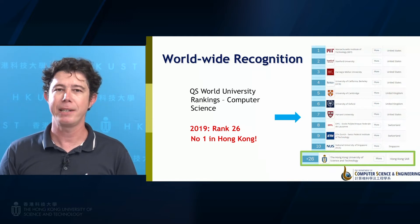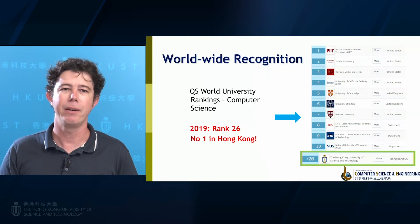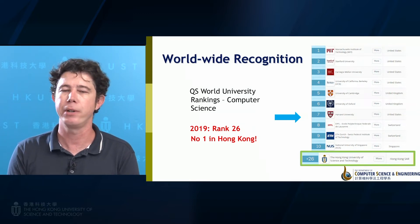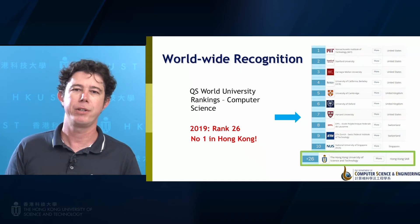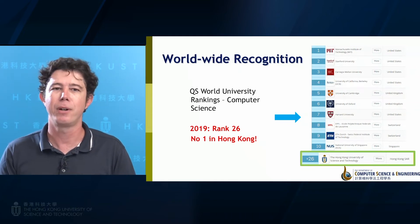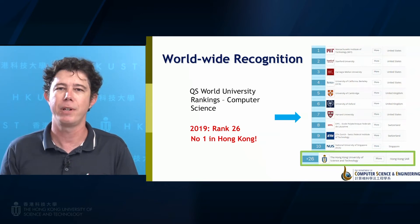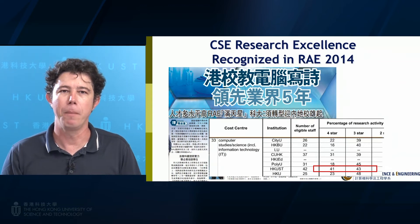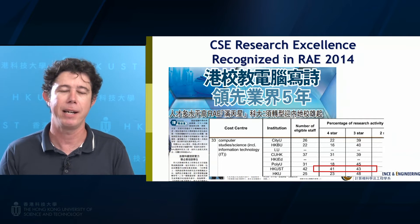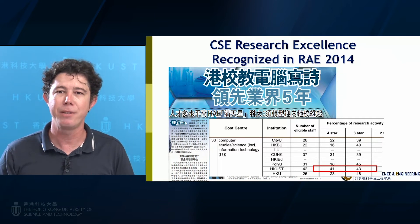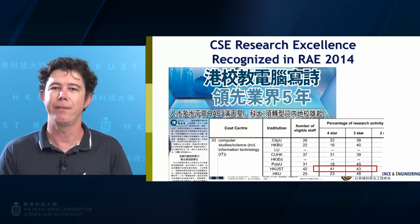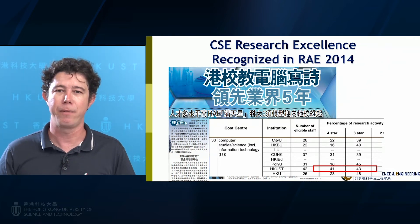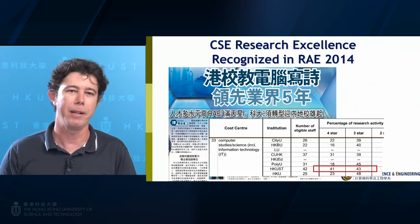Our department of computer science is a very highly ranked worldwide department within the area. It's currently number 26 in the world in the last QS World University Rankings. This ranking is based on several different criteria including teaching, research, and student satisfaction. It's the first in Hong Kong and number 26 in the world, with many top universities in that list. We also have a research assessment exercise in Hong Kong, and the percentage of high-quality research in our department is very high — nearly half is at the highest level, four star, and three star accounts for the rest.